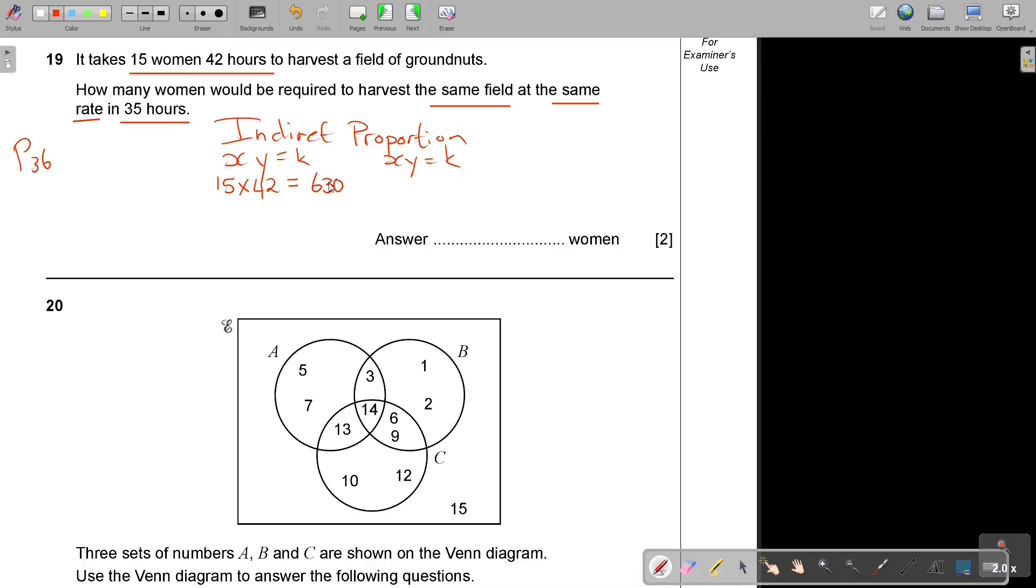So it's almost that 630 is the field. Now I put the 630, but now let's say in this case it's x times 35. I don't know the woman, but I know the 35. And then I just divide by 35. And if you say 630 divide by 35, you are going to get 18.